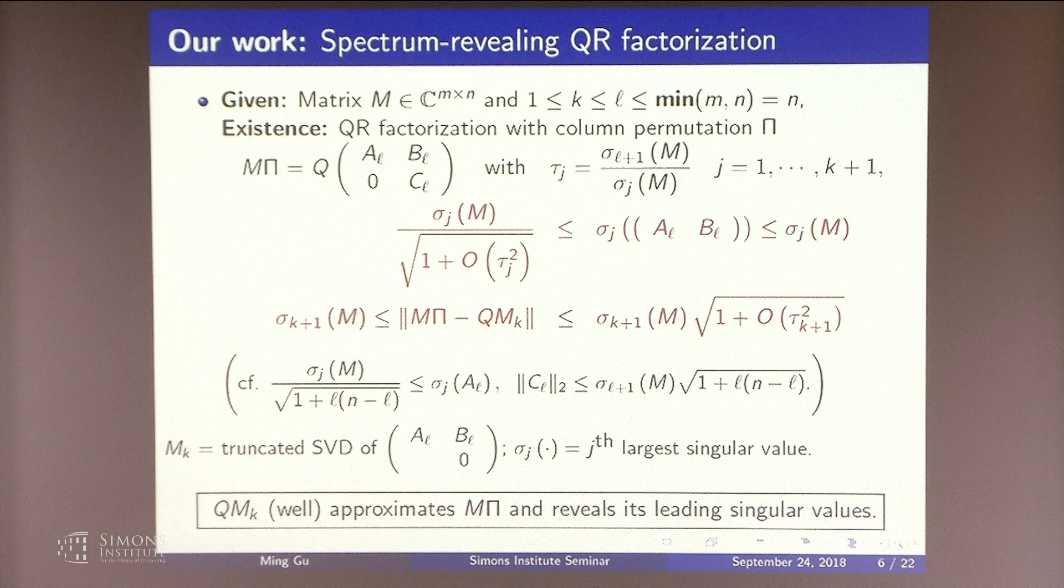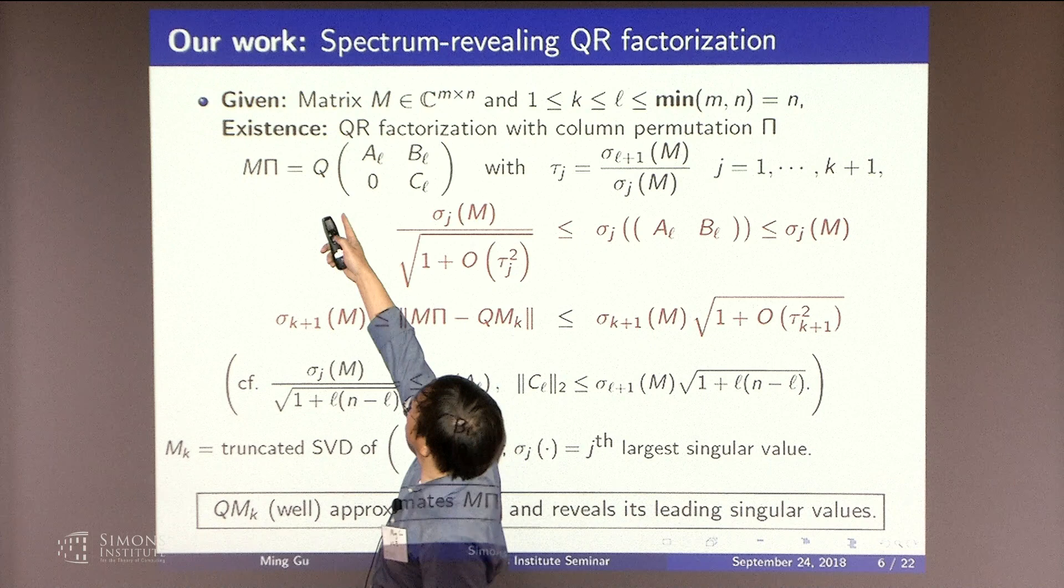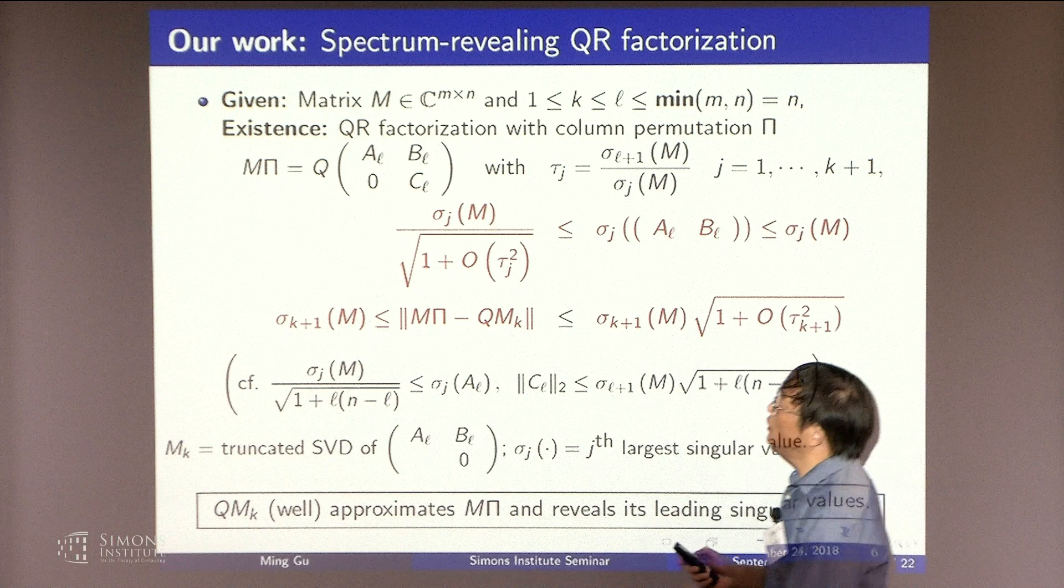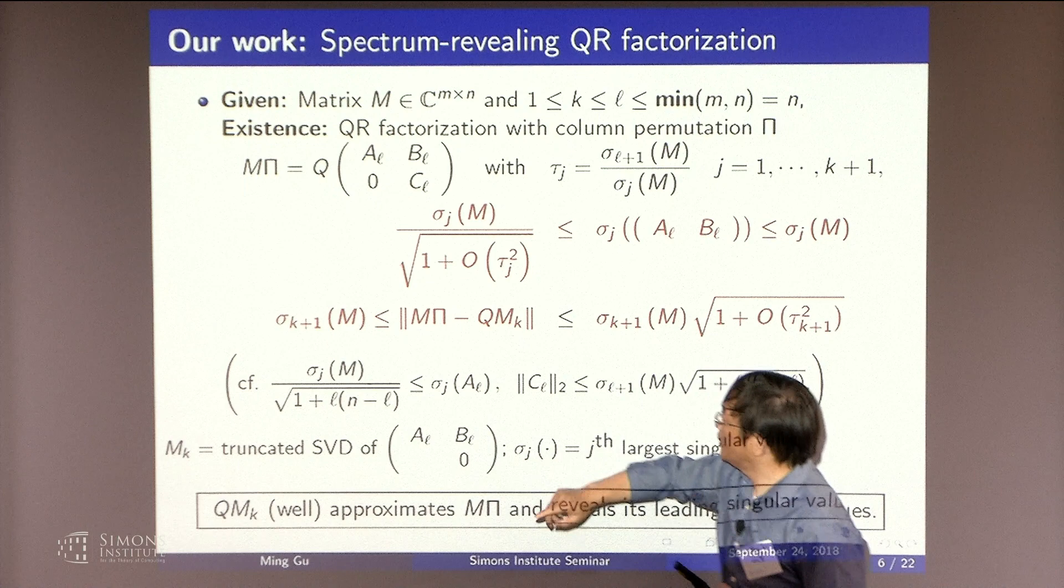So what we do is to look at it slightly differently. It's still the same factorization. Again, this pi is the column permutation. You do a partial QR factorization. But what we're going to look at is not the matrix AL. Rather it's going to be AL BL. You're going to throw away the CL part of the matrix. And now you do analysis.